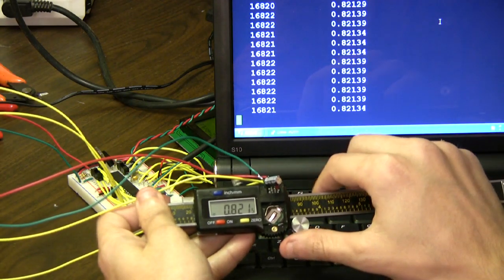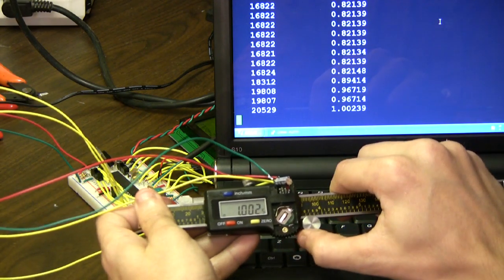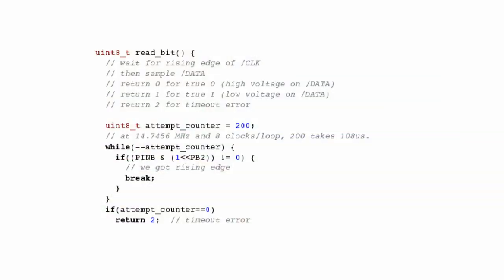For our international customers, don't worry, showing millimeters is easy too. If you take a look at the code, we've tried to structure it to be fairly readable. We have a read bit function which waits for a transition on the clock line and then reads the data line.